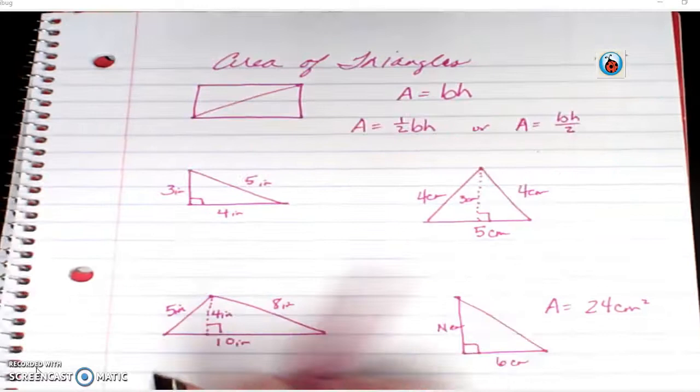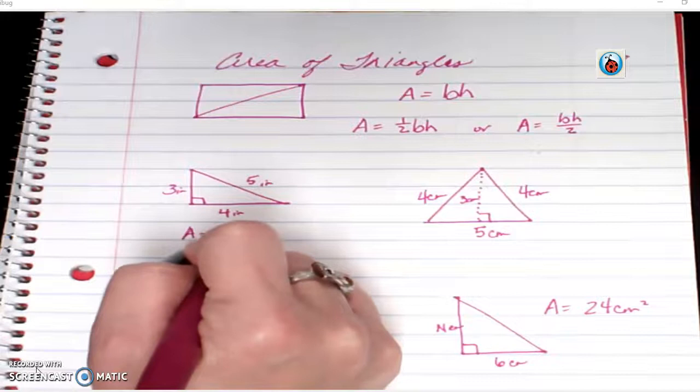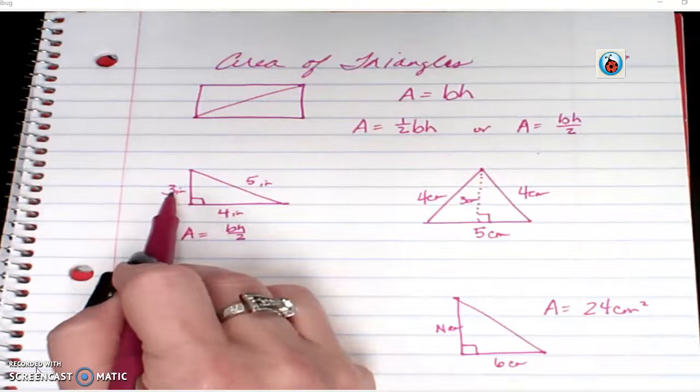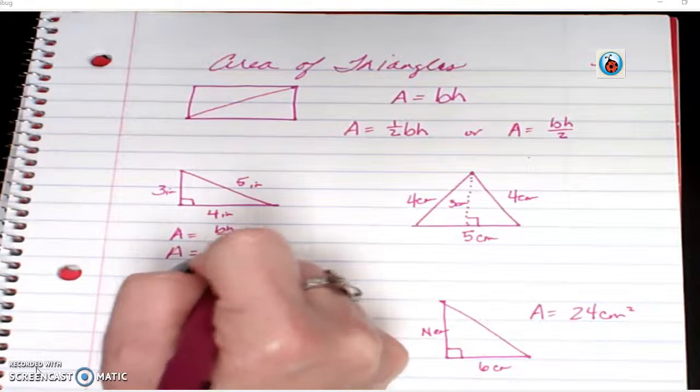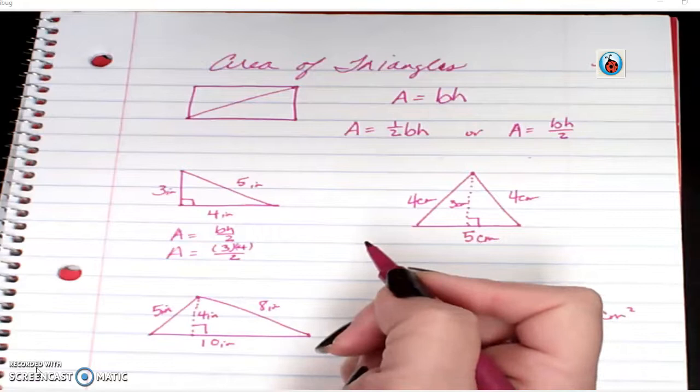So, looking at your first problem here, we have area equals base times height divided by two. I have three numbers: a three, a four, and a five. But I know that my base and my height always make my right angle. So A equals three times four divided by two.